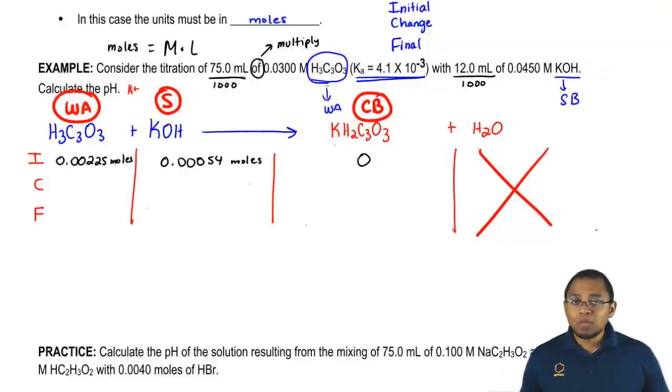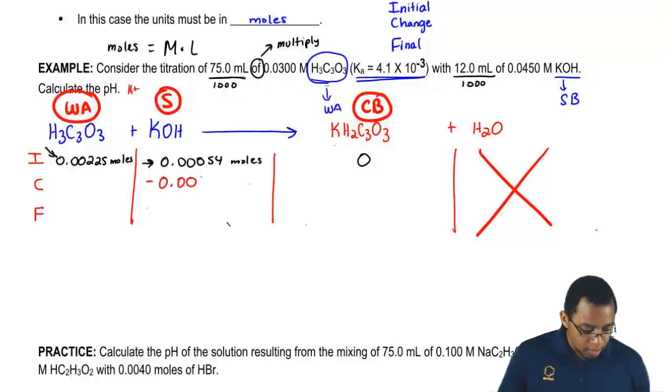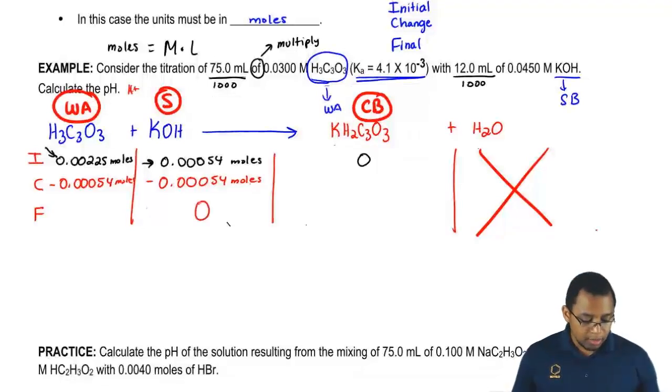An ICF chart is much more detailed and very different from an ICE chart. We're only going to pay attention to the reactant side. The smaller moles will try to neutralize the larger amount of moles. The strong base is going to take all of itself and try to neutralize as much of the weak acid as it can. At the end, you have no more strong base and you're still going to have some weak acid left.